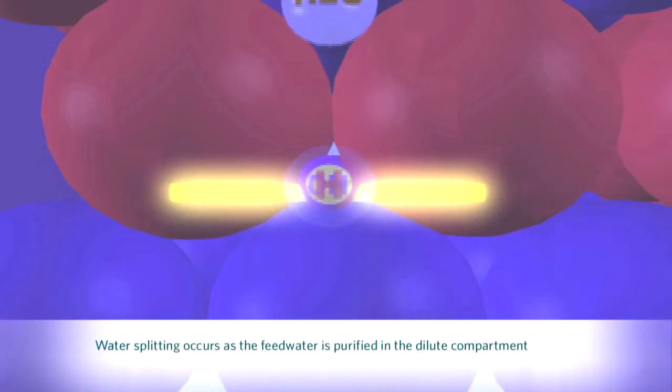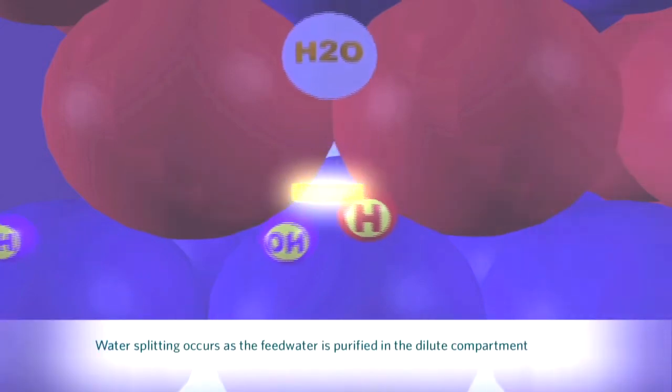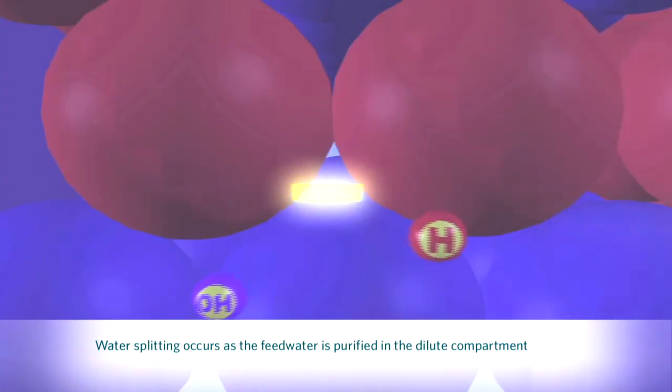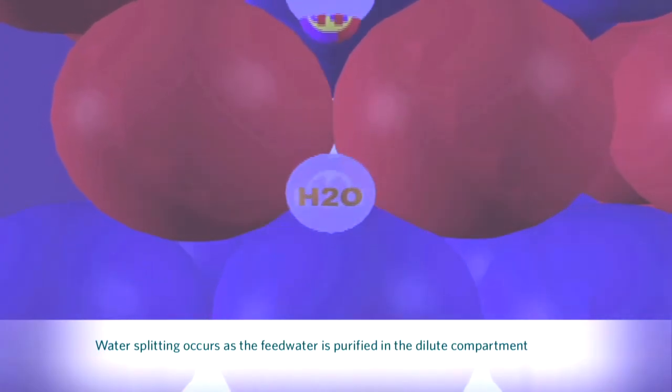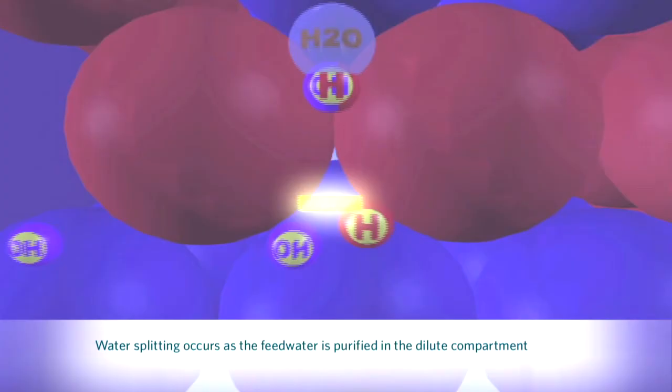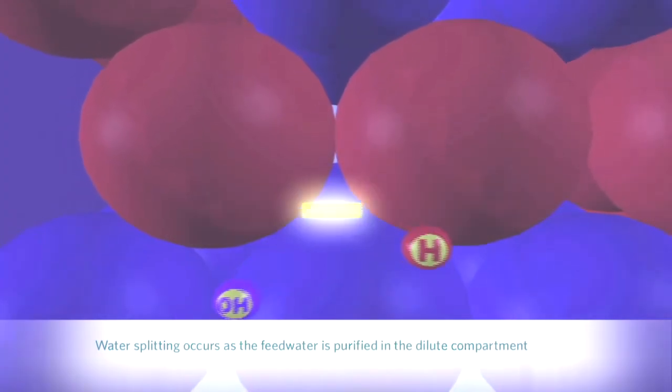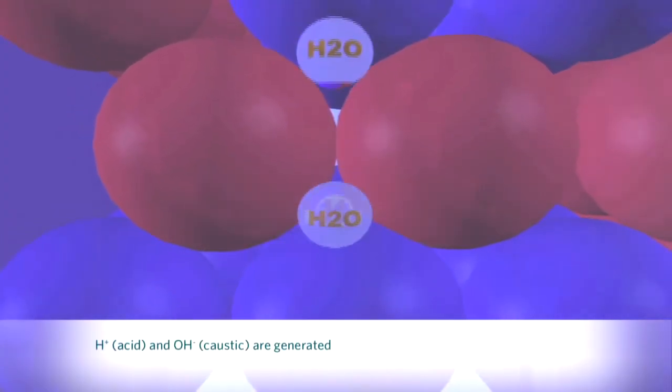When this localized voltage potential exceeds approximately eight-tenths of a volt, an electrochemical reaction occurs, and water molecules are split into hydrogen and hydroxide ions, which are essentially acid and caustic.